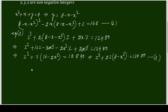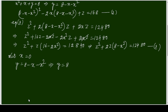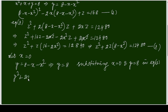Let x = 0. Then y = 8 − 0 − 0² = 8. Substituting x = 0 and y = 8 into equation 2, which is y² + 2xy + z = 168: we get 8² + 0 + z = 168, so 64 + z = 168.